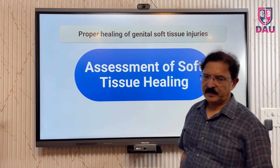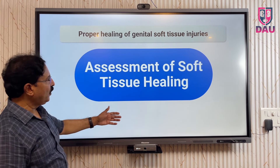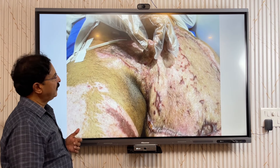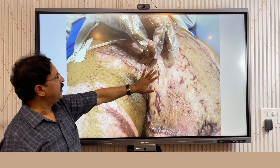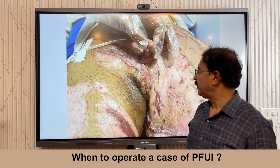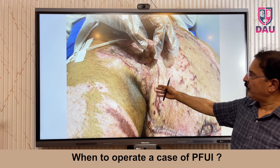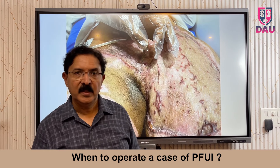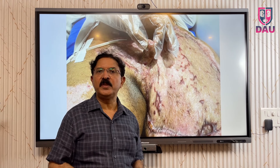The third factor is the proper healing of genital soft tissue injuries. Look at this patient who has extensive soft tissue mutilating injuries — it took a long time to heal and even now there is much scar and graft tissue. It becomes very difficult to decide where to make the incision and how to mobilize, so sometimes soft tissue injuries may influence your decision of when to operate.